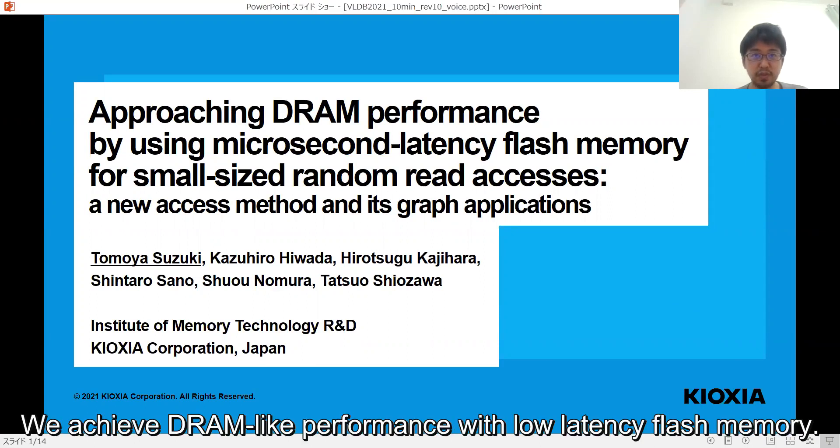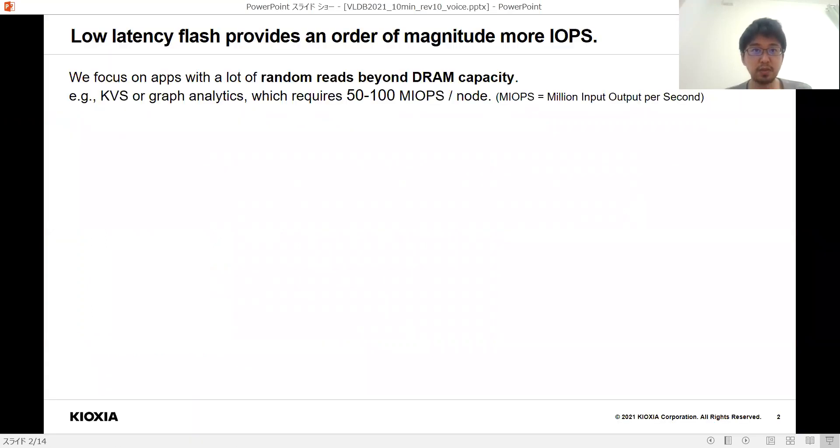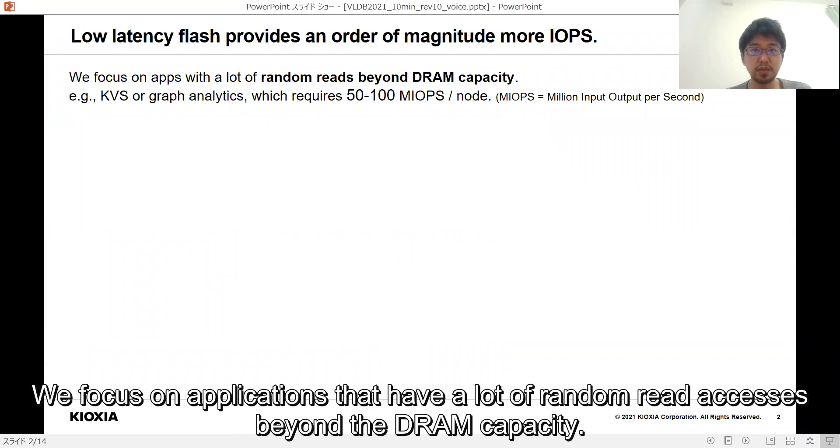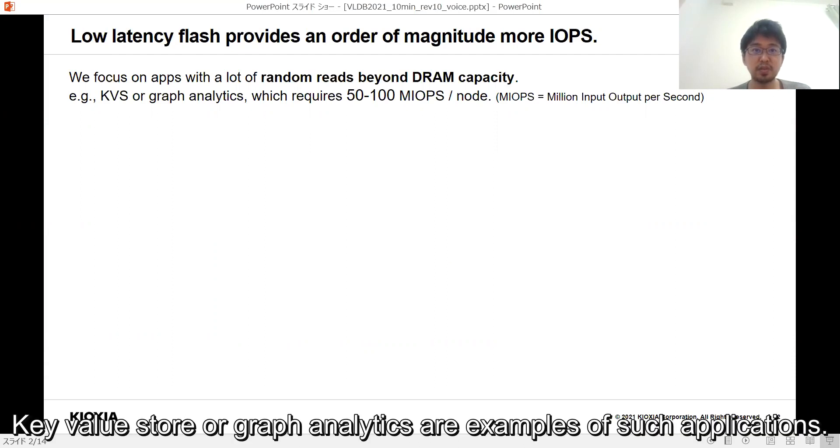We achieve DRAM-like performance with low-latency flash memory. We focus on applications that have a lot of random read accesses beyond the DRAM capacity. Key value store or graph analytics are examples of such applications.